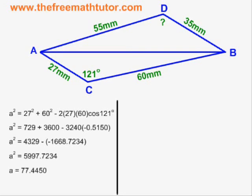Once we know side AB, we are then able to move into the upper triangle and use cosine law again to solve for the missing angle.